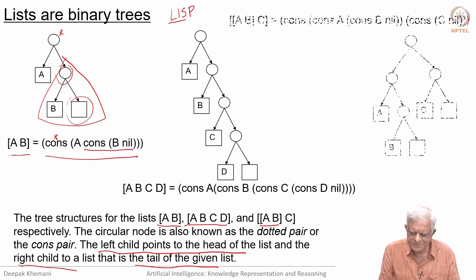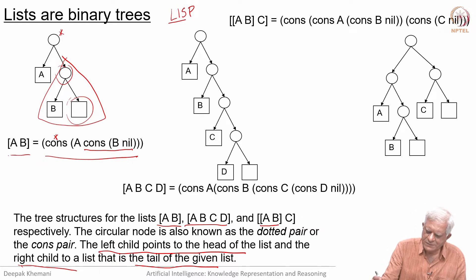The third list has a nested list. At the topmost, I have a cons, but the head of the list is itself a list which is shown here, and the tail of the list is the list which contains only C. It is seen as a list which is cons of C of nil.